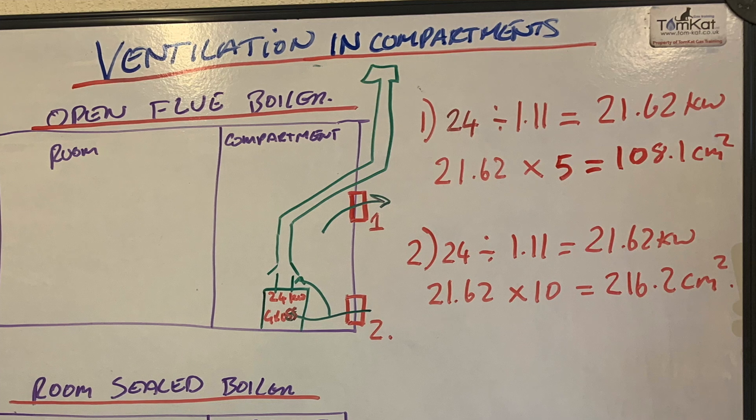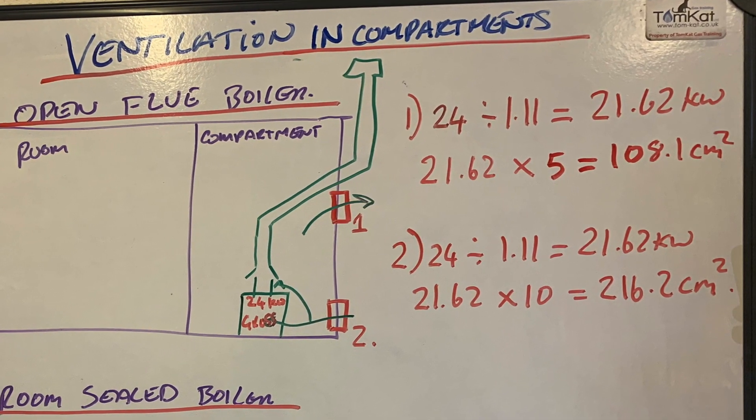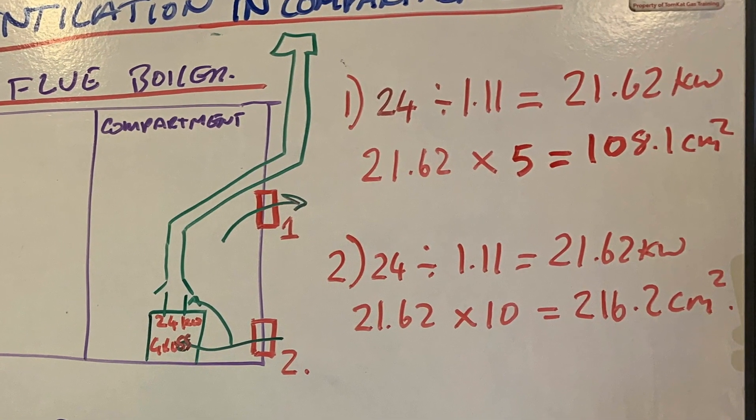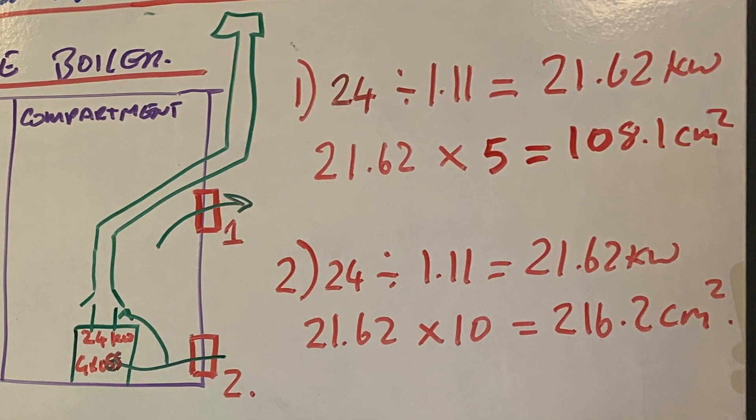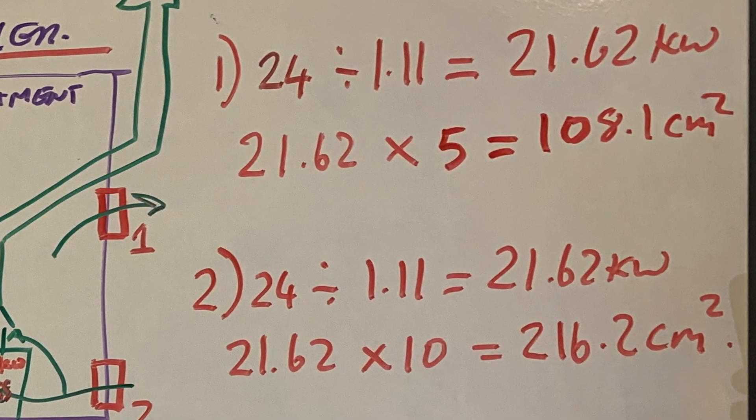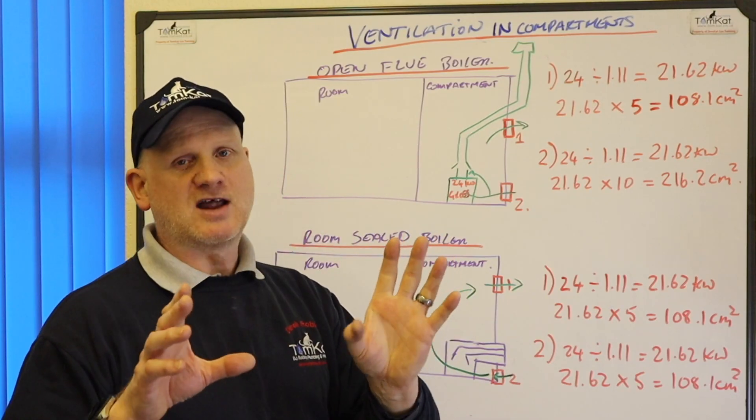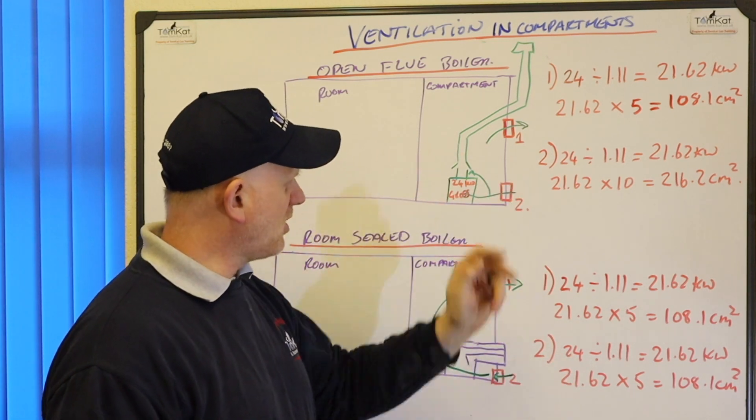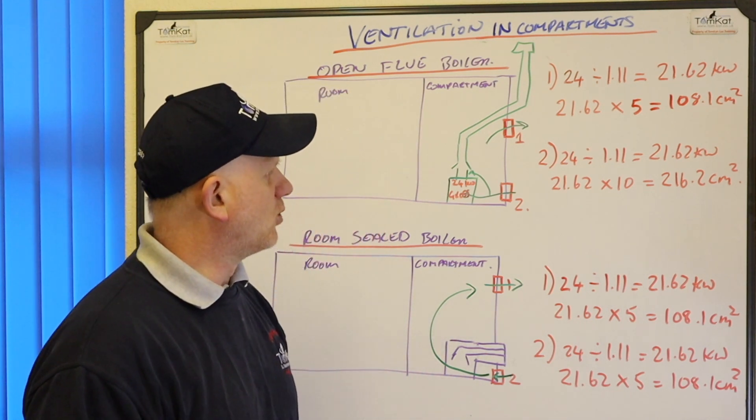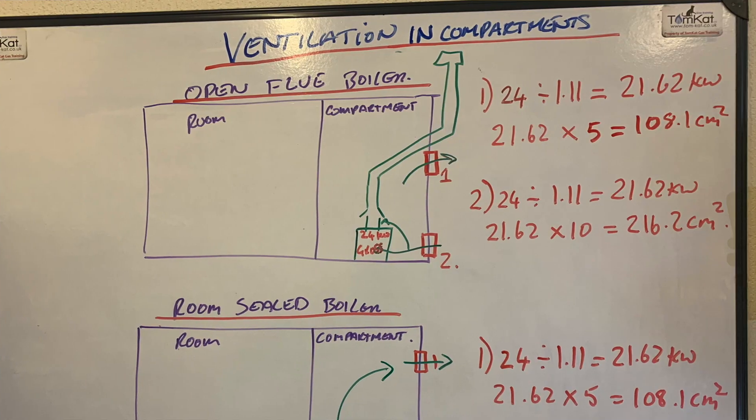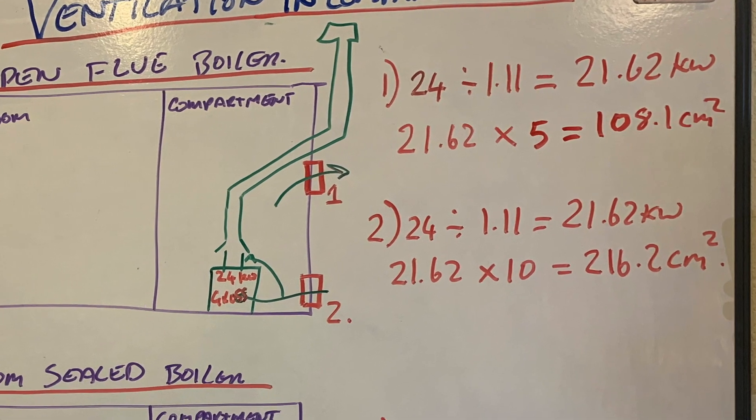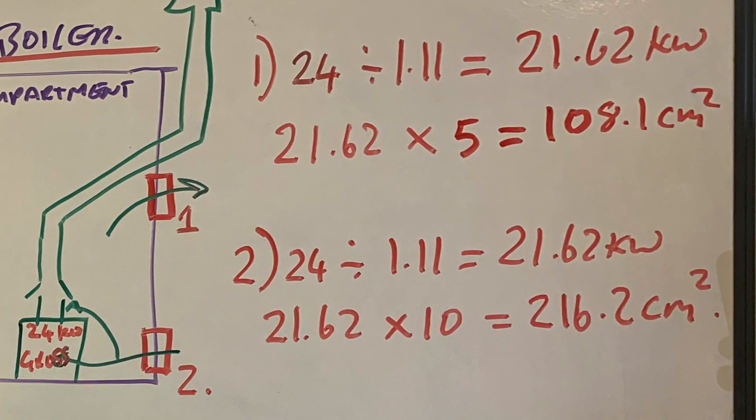So we need to do 24 divided by 1.11 is 21.62kW. Then we need for the top vent, because it's for cooling, we need to times it by 5. So it's 21.62 times 5 is 108.1cm². So that's your top vent, which is just mainly for cooling. Now your bottom vent, which is for combustion. So you've got 24 divided by 1.11 again is 21.62 because returning gross to net. And then we've got 21.62 times 10 this time, which is 216.2cm².